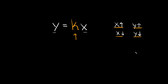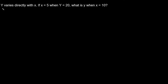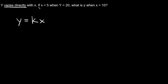So let's do a couple examples with direct variation. Here's our first problem: y varies directly with x. If x is equal to 5 when y is equal to 20, what is y when x is equal to 10? The first thing you always want to do with these problems is solve for k — your constant of variation — by writing the direct variation equation and plugging in the numbers given.